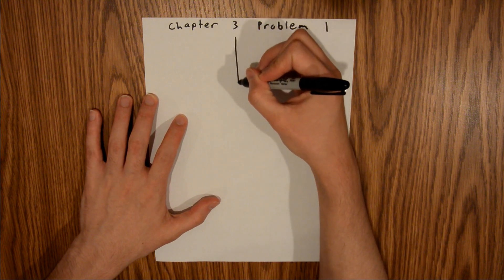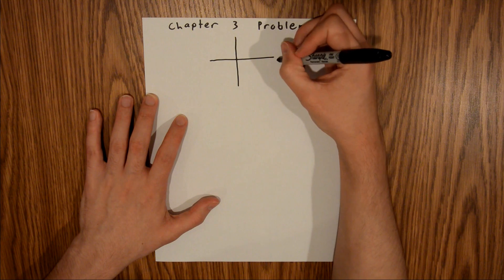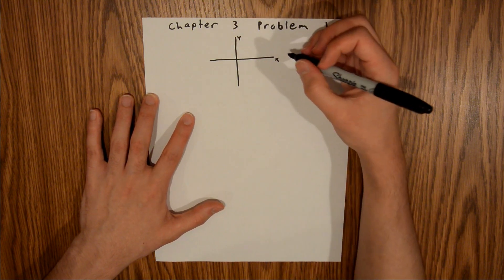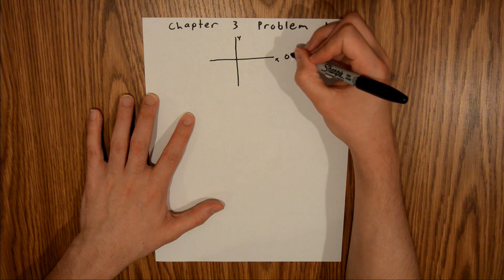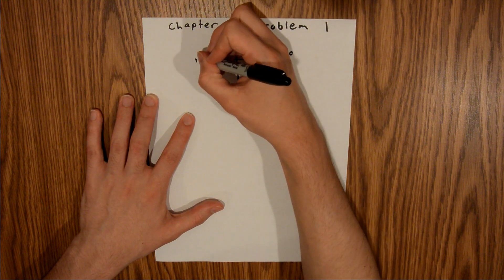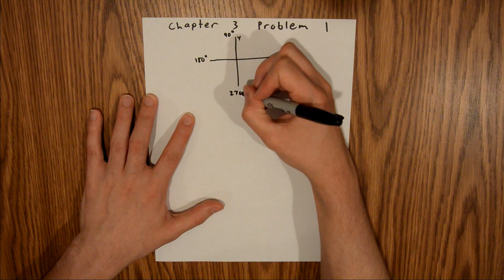So we'll say this is our xy plane. This is x, this is y, and if we think about this in terms of degrees, this is zero degrees, this is 90 degrees, this is 180 degrees, and this is 270 degrees.